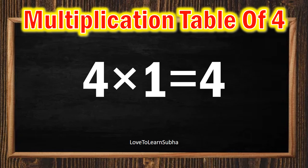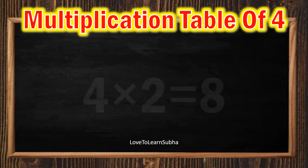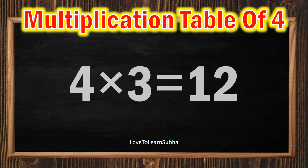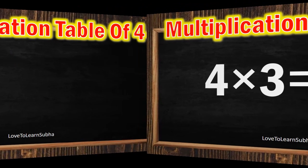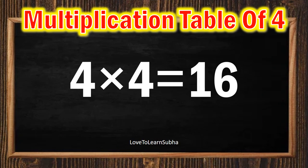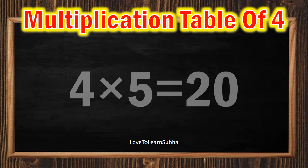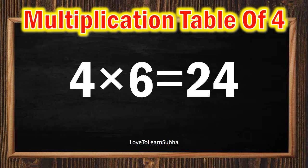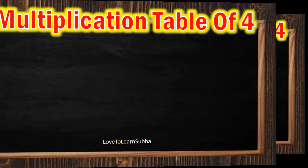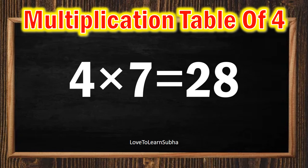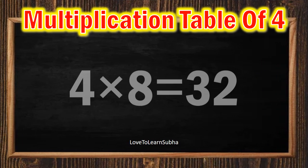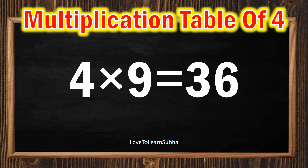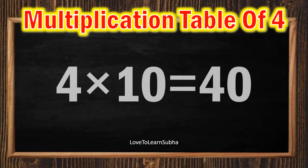4 ones are 4. 4 twos are 8. 4 threes are 12. 4 fours are 16. 4 fives are 20. 4 sixes are 24. 4 sevens are 28. 4 eights are 32. 4 nines are 36. 4 tens are 40.